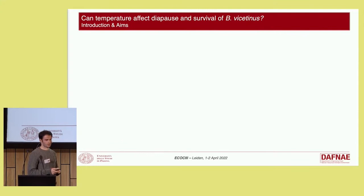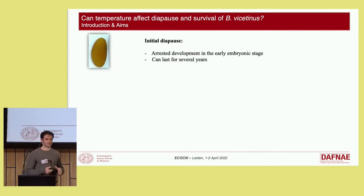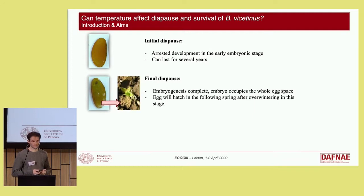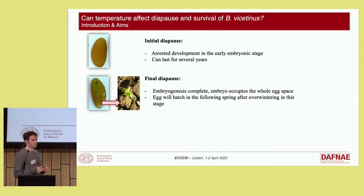We chose to investigate how temperature can affect the diapause and the survival of this pest. As I said, an egg can stay in the ground for several years in a state called initial diapause, where there is arrested development in the early embryonic stage. When the embryo starts to develop, it can reach the final diapause stage where embryogenesis is complete and the embryo occupies the whole egg space. An egg will hatch in the following spring after overwintering in the final diapause stage.